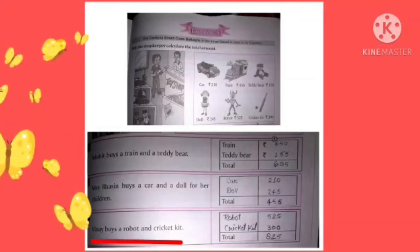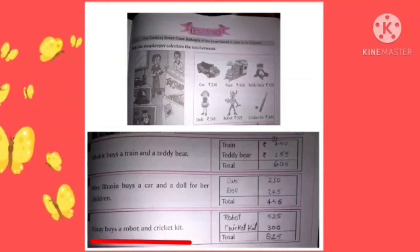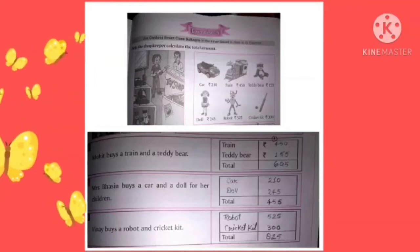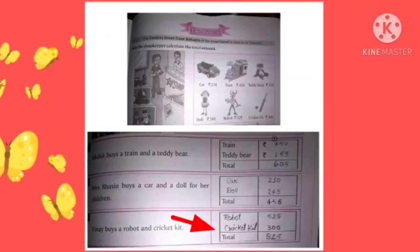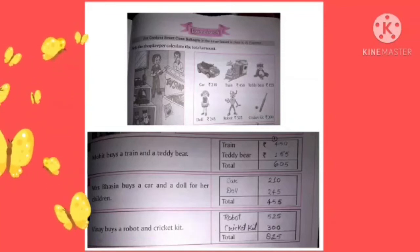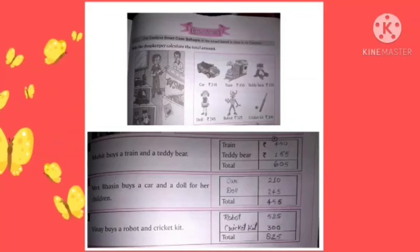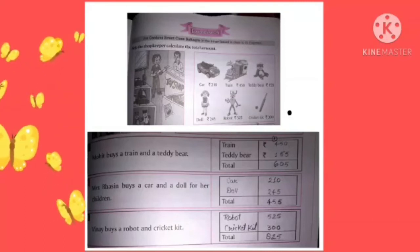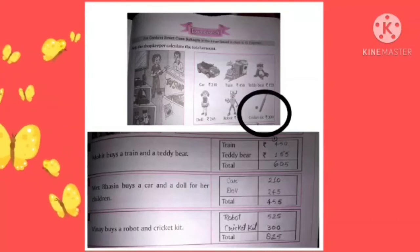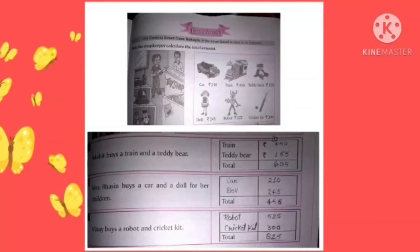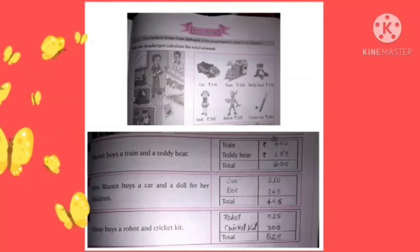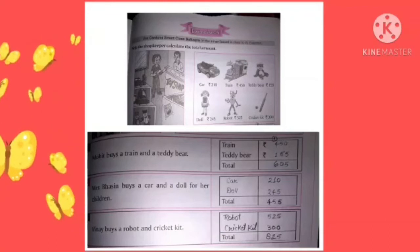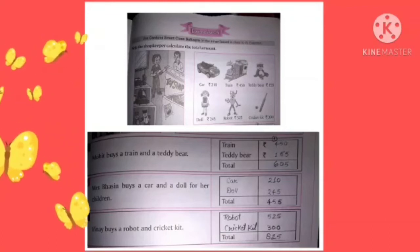Binita buys a robot and a cricket kit. Binita ne robot kharida aur cricket kit kharidi — toh write karo robot and cricket kit. Robot ka amount kya hai? 525. Aur cricket kit ka hai 300. Aur hamen ab kya karna hai? In dono ko add kar dena hai. Toh total humara number aaya 825.